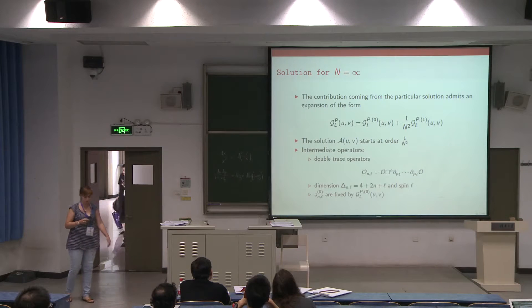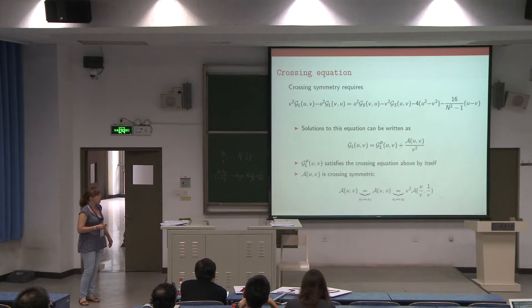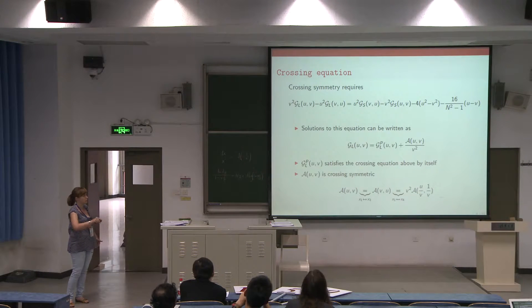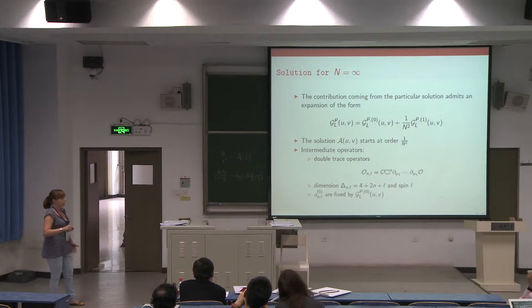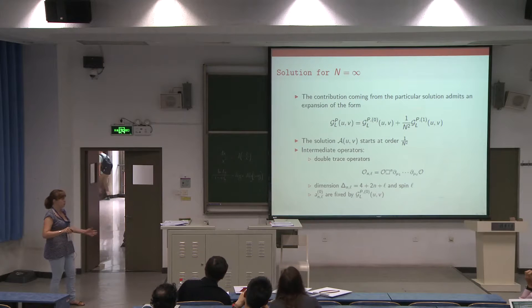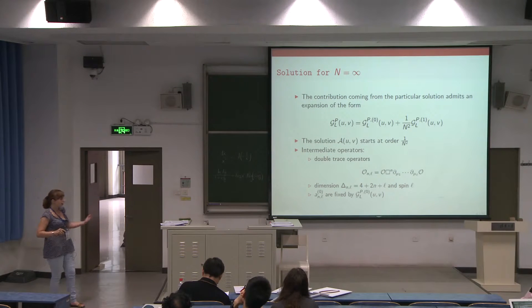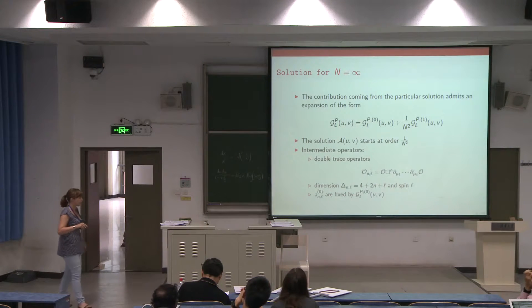I would like to find a solution in a large N expansion. Let me start with the leading term, which is for N equals infinity. The dependence on N comes from the right-hand side, so expanding in N means expanding that right-hand side in N. This particular solution has a leading piece plus a 1/N² correction. The crossing-symmetric solution starts at order 1/N². At leading order, we only have double-trace operators of the form [OO], with dimension equal to twice the dimension of the external operator plus 2n plus L, where L is the spin. The three-point function is fixed by this leading term.